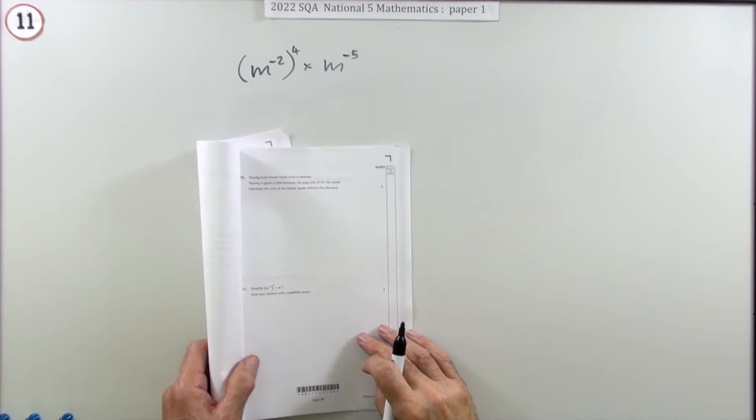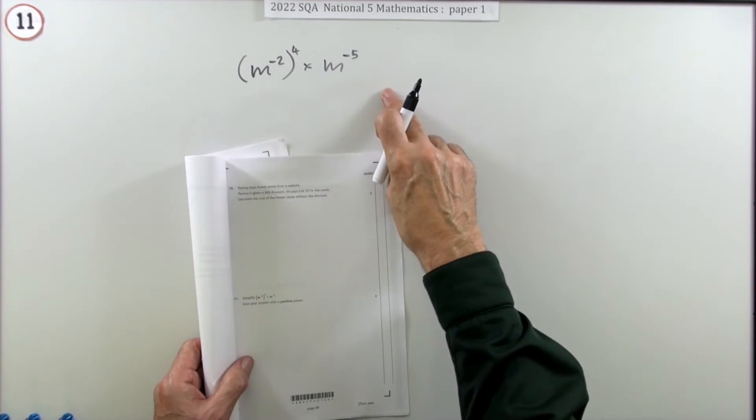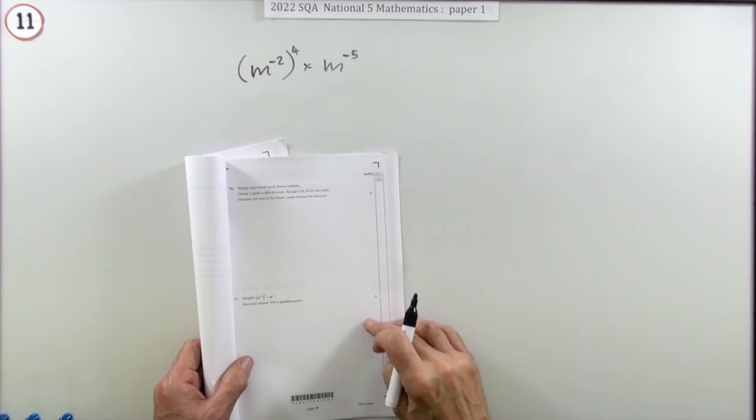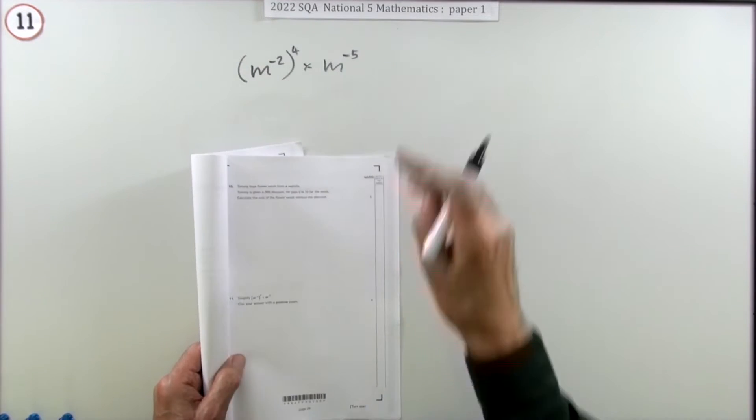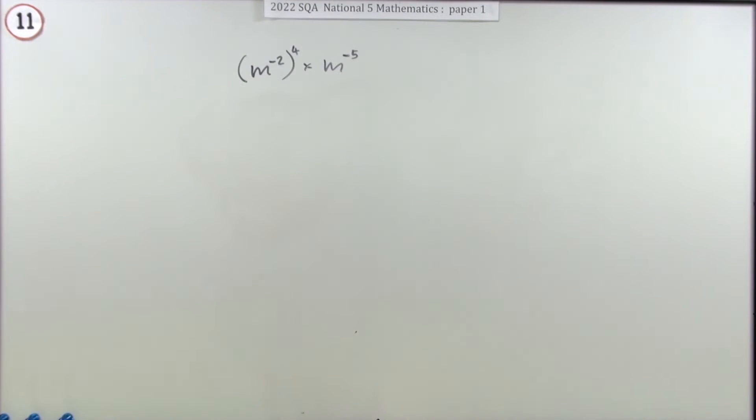So number 11 then from the 2022 National 5 paper 1, a three mark question on indices. It's very simple looking, there aren't even any fractions in these indices, they're all just powers. But it does say give your answer with a positive power, and you've got negative powers to begin with.